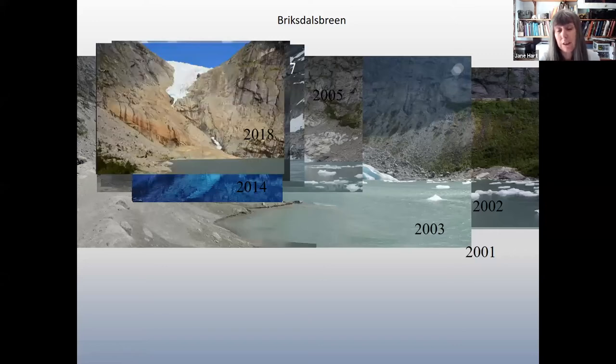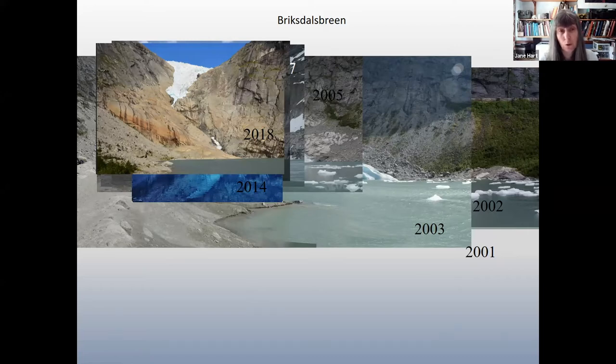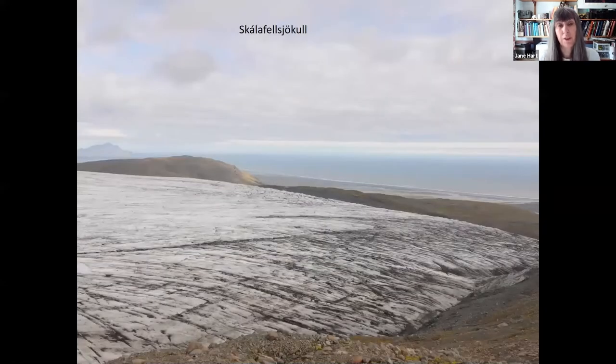And although this is one glacier, although an extreme example, this is pretty typical of all glaciers in the world. Almost all glaciers are retreating, not all of them as fast as this, but certainly glaciers are retreating. So after that we moved to work at Skalafellsjökull in Iceland, a little bit more of a stable glacier, but it was a great place to work.